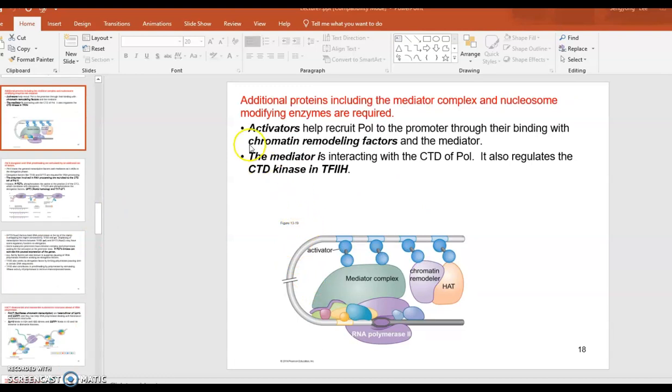Besides the general transcription factors, additional proteins are involved in the transcription initiation. Some of those additional proteins are such as activators, which are shown up here, activator proteins. They're involved in recruiting the polymerase enzyme to the promoter area. The activator and the mediator, they are working together to recruit the promoter enzymes. Especially the mediator is interacting with the C-terminus of the polymerase enzyme. It can also regulate the C-terminal domain of the kinase enzyme, so the phosphorylation is regulated by this mediator protein. That's why it's shown up there. Additional proteins that chromatin remodeling proteins are also important because chromatin structure should be remodeled to be more loosened up conditions for the transcription to take place. Understand these proteins.